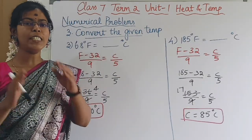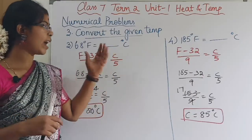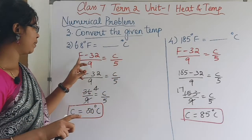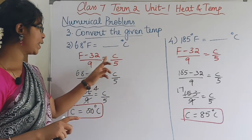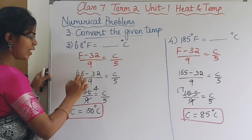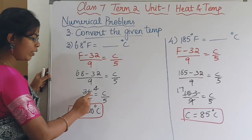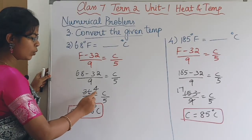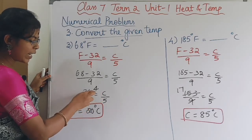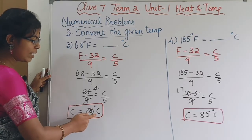Next, convert Fahrenheit to Celsius. Using (F - 32) / 9 = C / 5 with F = 38: (38 - 32) / 9 = 6 / 9. Multiplying by 5 gives C = 20 degrees Celsius. So 38 degrees Fahrenheit equals 20 degrees Celsius.